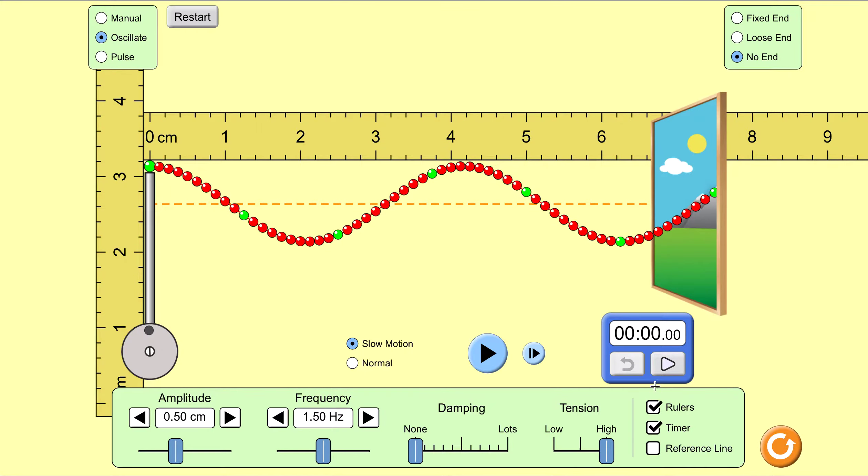Here are the rulers, here's the timer. I've also set it to slow motion for myself because it's just easier to record starts and finishes and watch everything happen in slow motion. It's up to you if you want to do it in slow motion or normal.